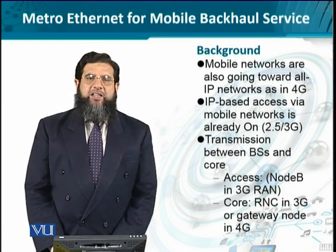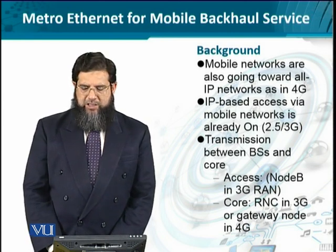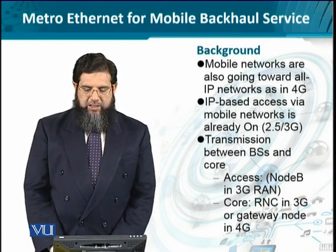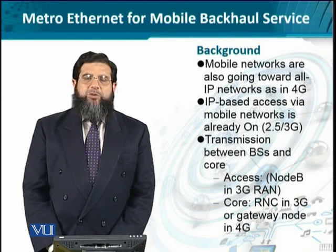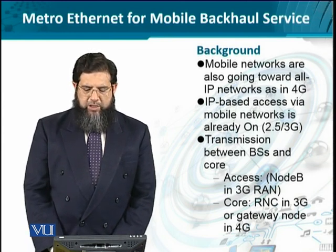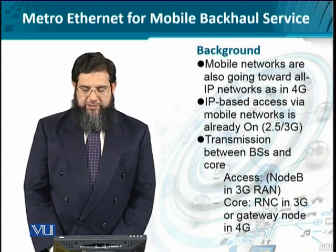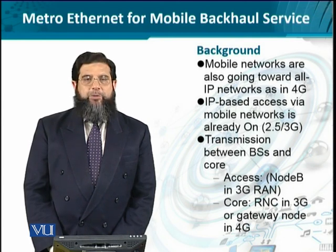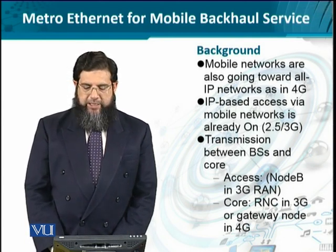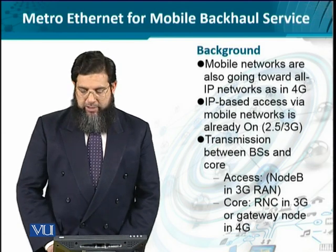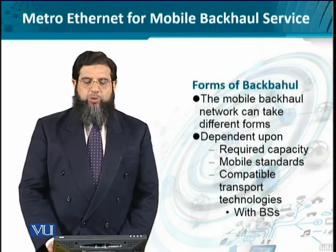We have already seen that starting from 2.5G — GPRS, EDGE, HSPA — to 3G, and then 4G as well. However, the transmission between network elements such as the base stations and the core — on the access side we have base station, BTS, BSC, Node B in 3G radio access network, and on the core side, which can have the radio network controller or a gateway Node as in 4G networks. If we really want to provide very high connectivity at a very high data rate with high availability, we have to think about providing this service through Metro Ethernet.